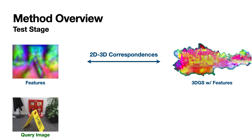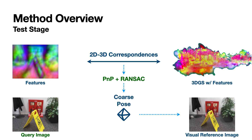These correspondences enable us to apply PnP with RANSAC to estimate a coarse pose prior. Using the estimated coarse pose, we render a visual reference image from the 3D scene model. This rendered image serves as a guide for further refinement of the camera pose.